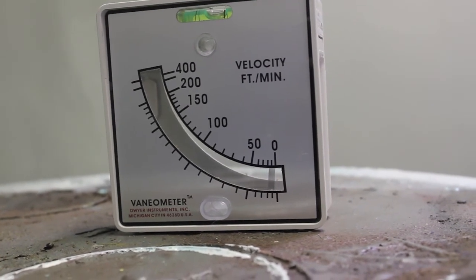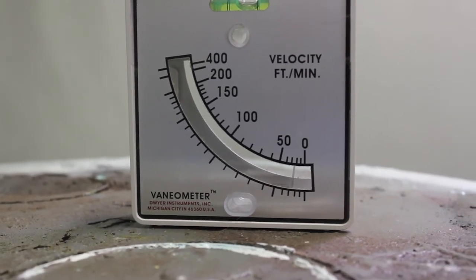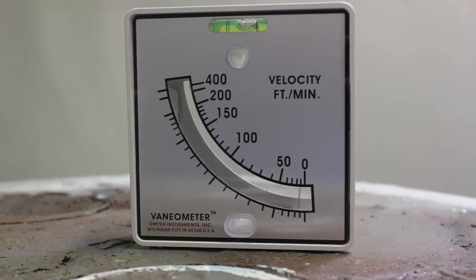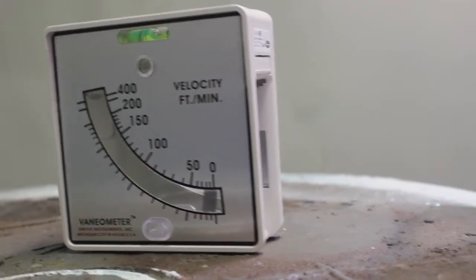Now, if your airflow isn't where you want it to be, there's a variety of things to check. First would be to check your filters to make sure they aren't overly dirty. Dirty filters slow down airflow in a paint booth as they load up with paint.